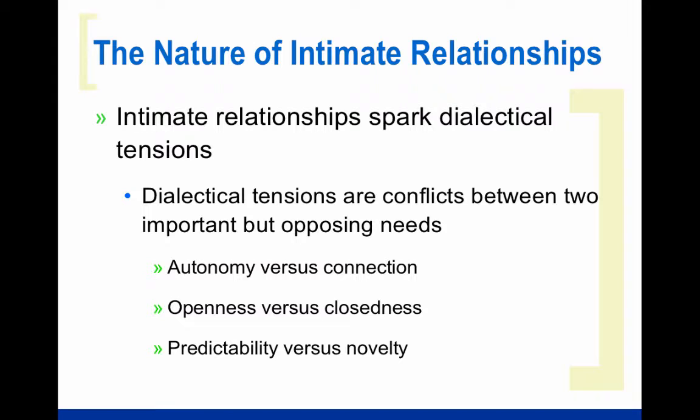And then there is predictability versus novelty. Predictability — that security, that knowledge that somebody is always going to be there and the same things are going to happen on a daily basis — makes some people feel very good, versus novelty: new, interesting, different situations. As you can see, many conflicts in intimate relationships spring up because of the push and pull between those very important things that we all need and how they affect the intimate relationship.